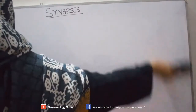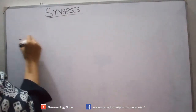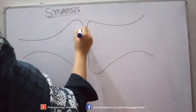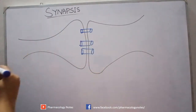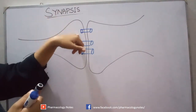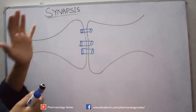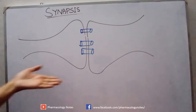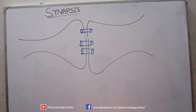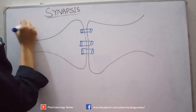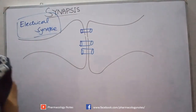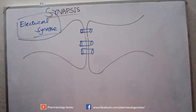An electrical synapse is a type of synapse where two neurons are closely connected and there lie ion channels between them. When an action potential comes, it causes ions to move in or out, reaching a threshold and ultimately causing synchronization between neurons. When communication between two neurons occurs through electrical signals only, due to these ion channels, it is termed as an electrical synapse.